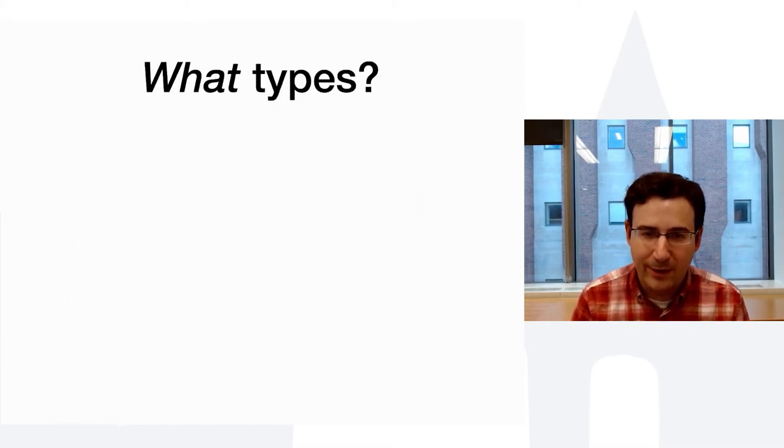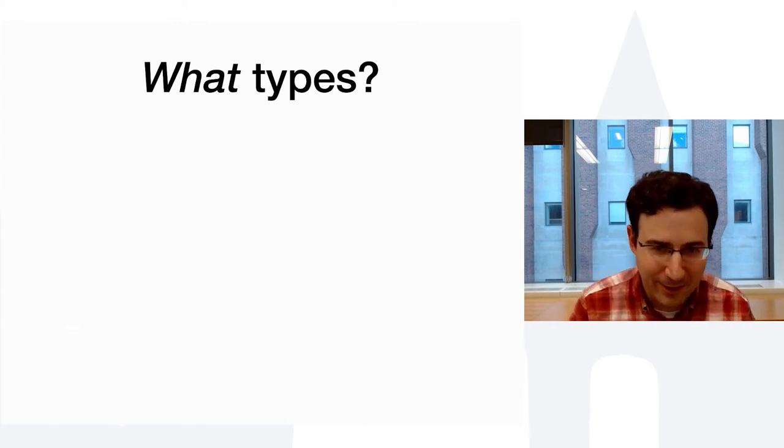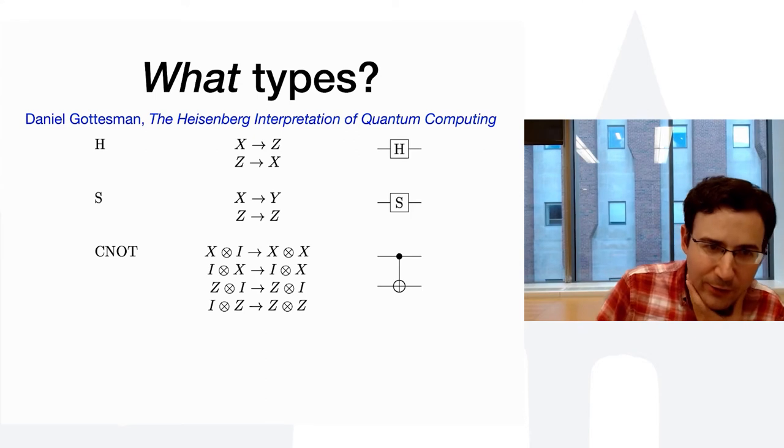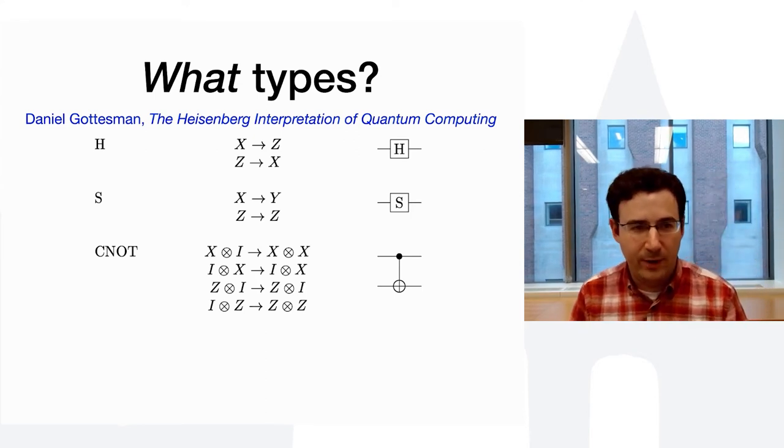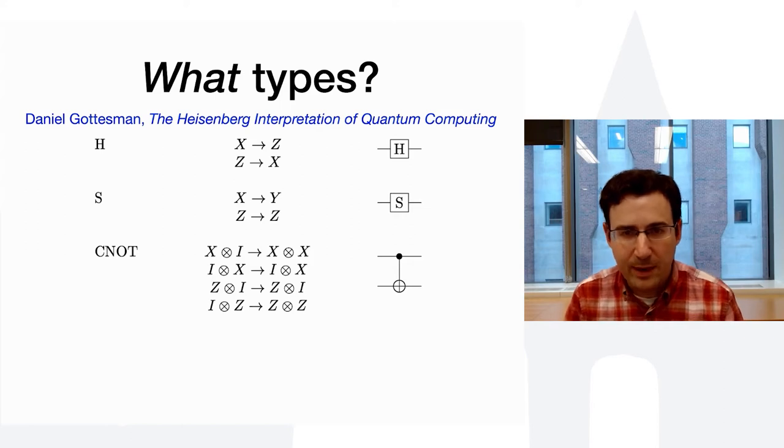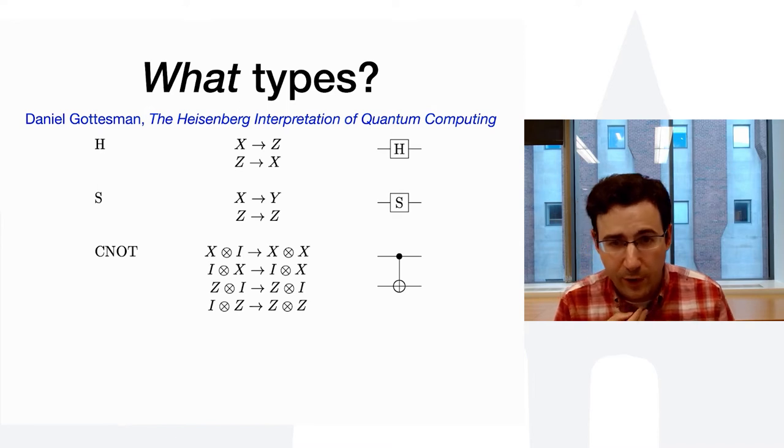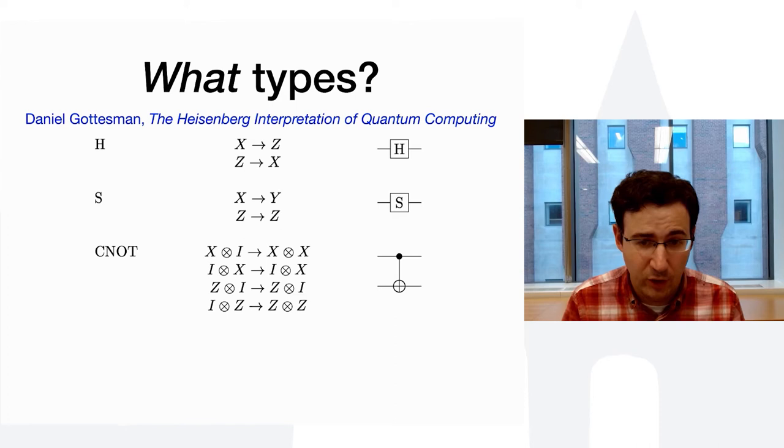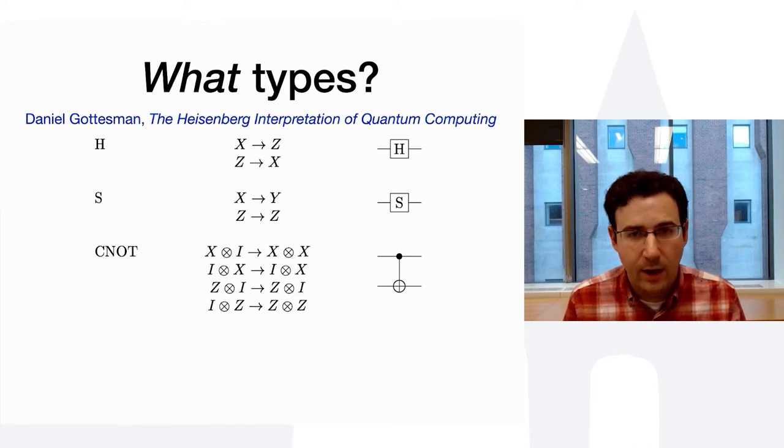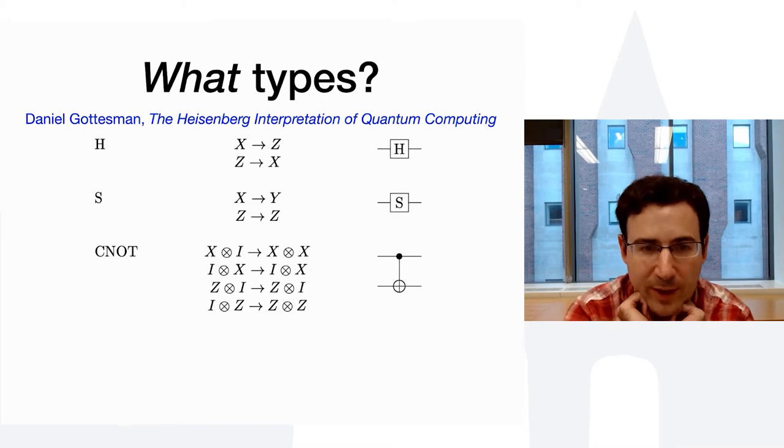So, your first question when I started this off is, what are Gottesman types exactly? Gottesman types stem from Gottesman's famous paper called the Heisenberg Interpretation of Quantum Computing, which is best known for what's called the Gottesman-Neill theorem, that the Clifford Group is efficiently simulable on a regular computer. And what I found interesting about this paper is that it has a whole bunch of things that look like types.